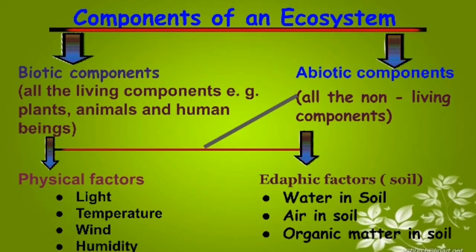Components of an ecosystem are divided into two types. Biotic components are all the living components — example: plants, animals and human beings. Abiotic components are all the non-living components, divided into two types: physical factors and edaphic factors (soil). Physical factors include light, temperature, wind and humidity. Edaphic factors include water in soil, air in soil and organic matter in soil.